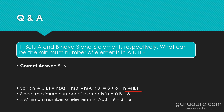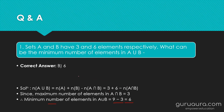We don't know the value of N(A∩B), but the maximum number of elements in A∩B will be three. Substituting three, we get 9 − 3 = 6. So six is the minimum number of elements in A union B. Hope you got the right answer. Now let's move to the next question.